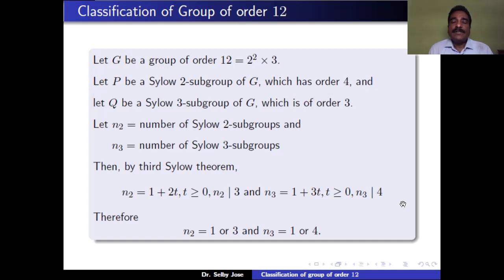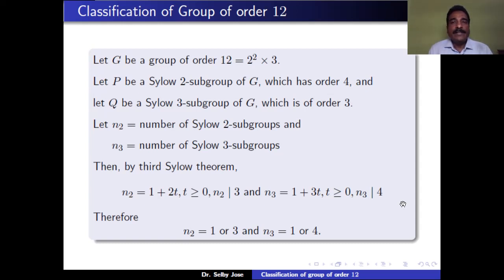By the third Sylow theorem, N2 = 1 + 2t for some t ≥ 0, and N2 divides the index of P in G. The index of P in G equals 12/4 = 3. So 1 + 2t divides 3, which is possible only for t = 0 or t = 1. Therefore, N2 = 1 or 3.